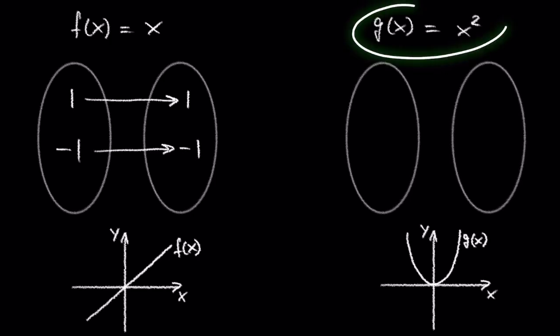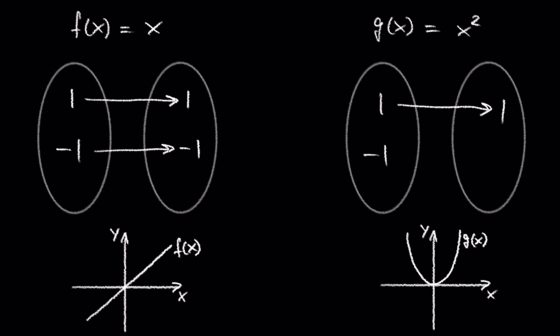What about the function g of x equals x squared? If we plug in a 1, we get a 1 as an output. If we plug in a negative 1, we get a 1 as an output. Do you see the difference between these two functions?